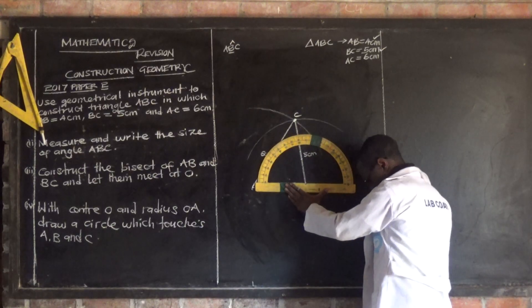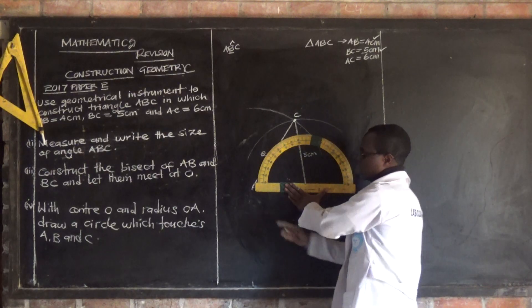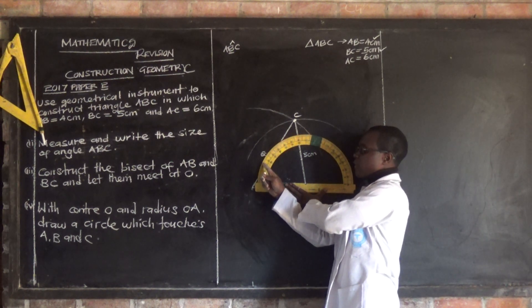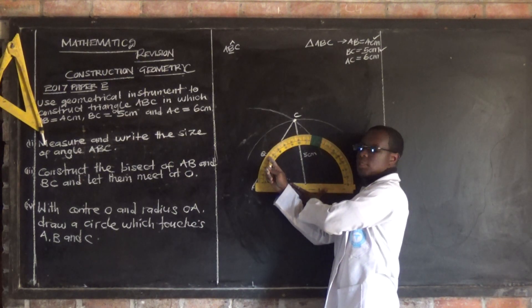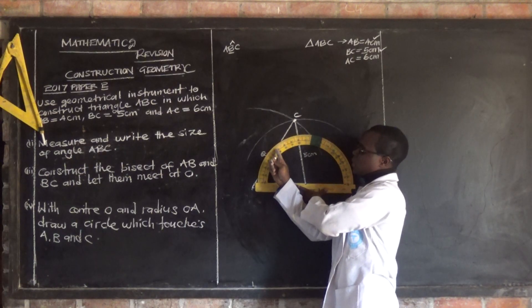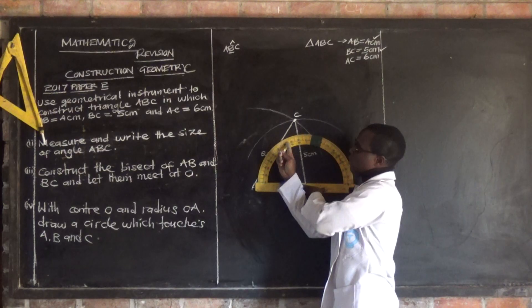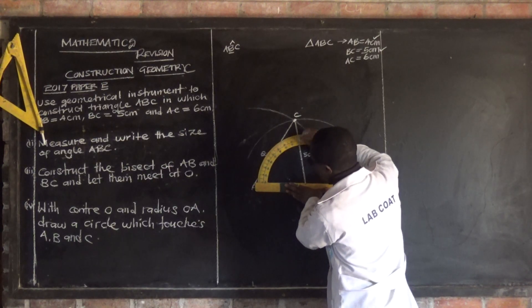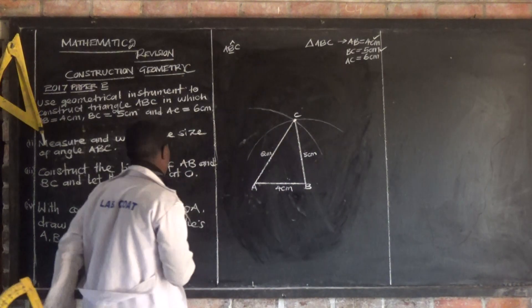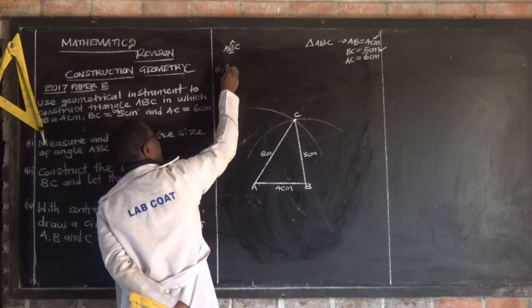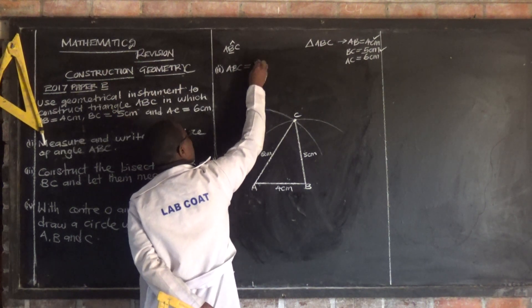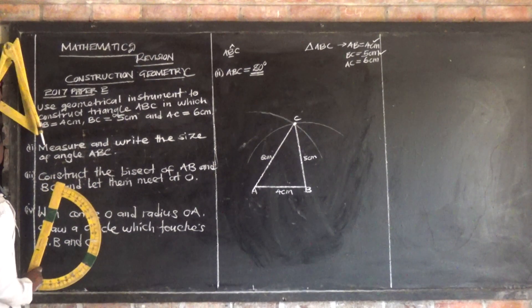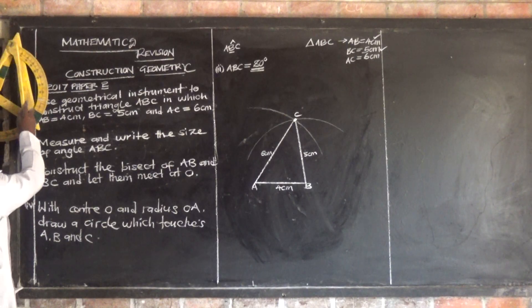Let's measure together. Starting from 0: 5 degrees, 10, 15, 20, 25, 30, 35, 40, 45, 50, 55, 60, 65, 70, 75, 80 degrees. The line is passing at 80 degrees. So you write for part two: angle ABC is equal to 80 degrees.